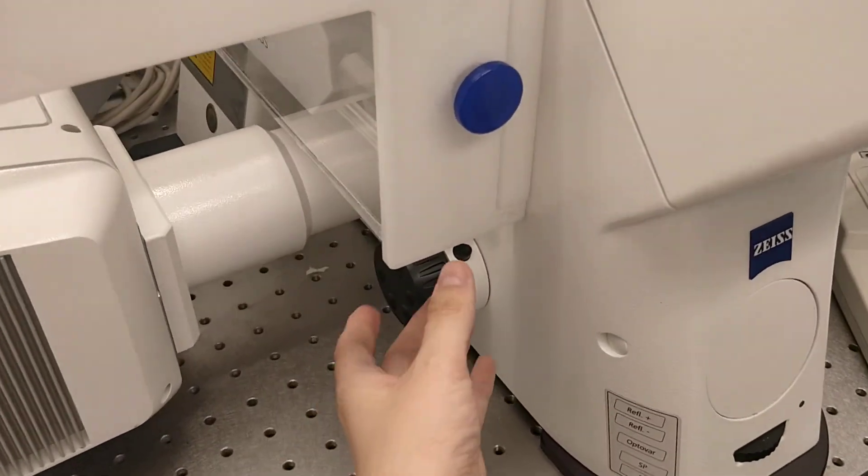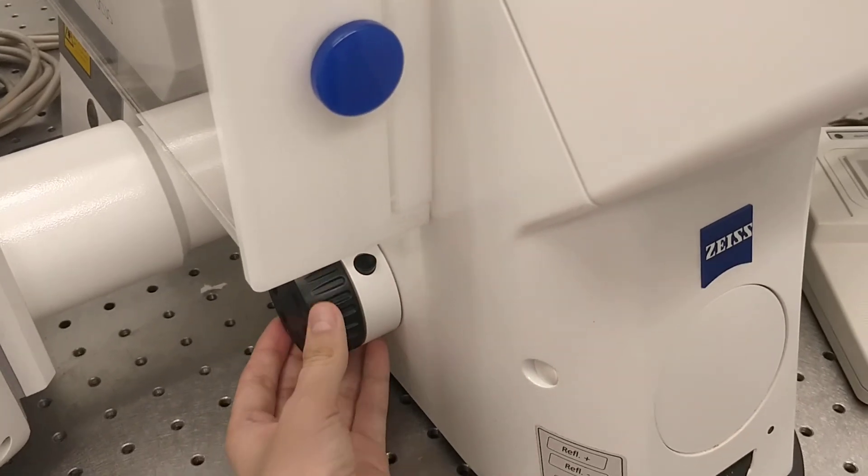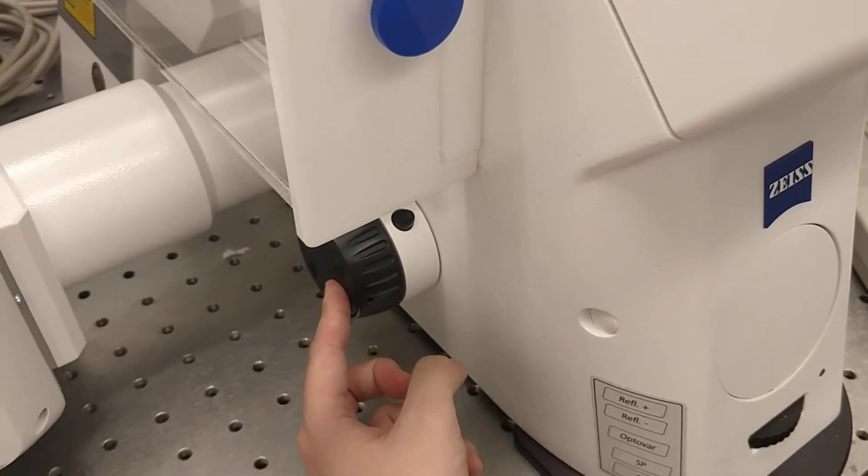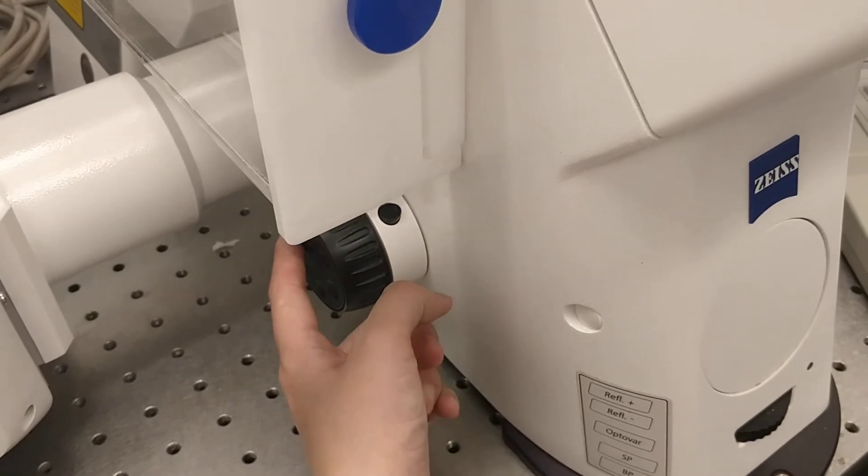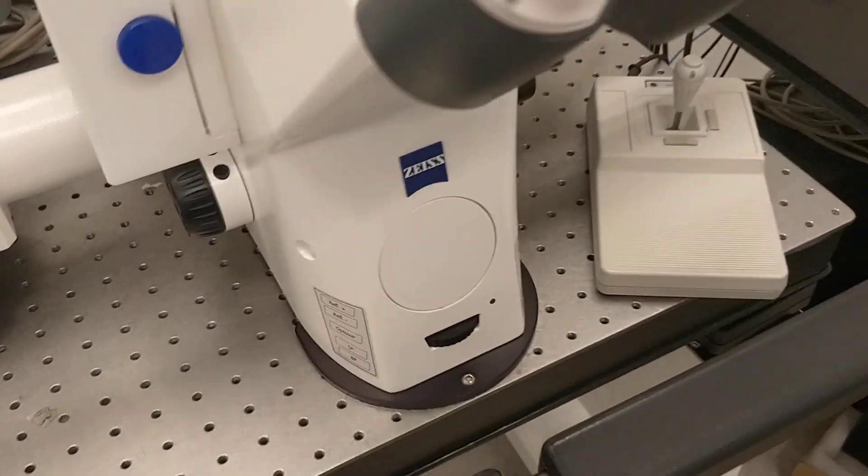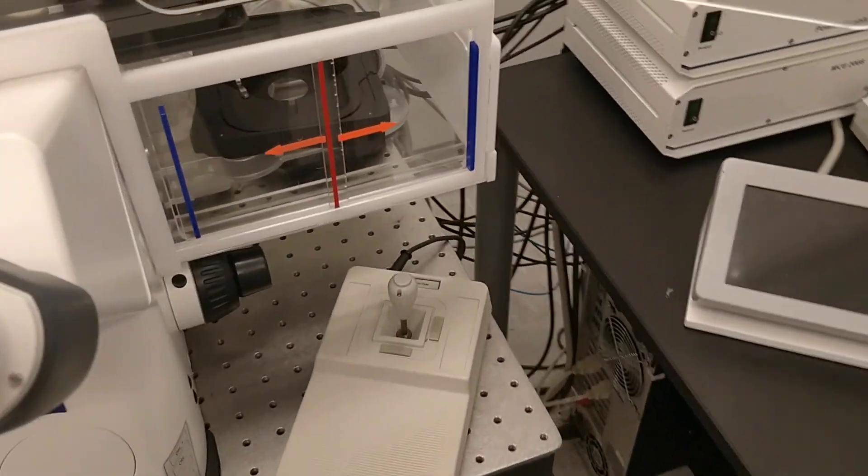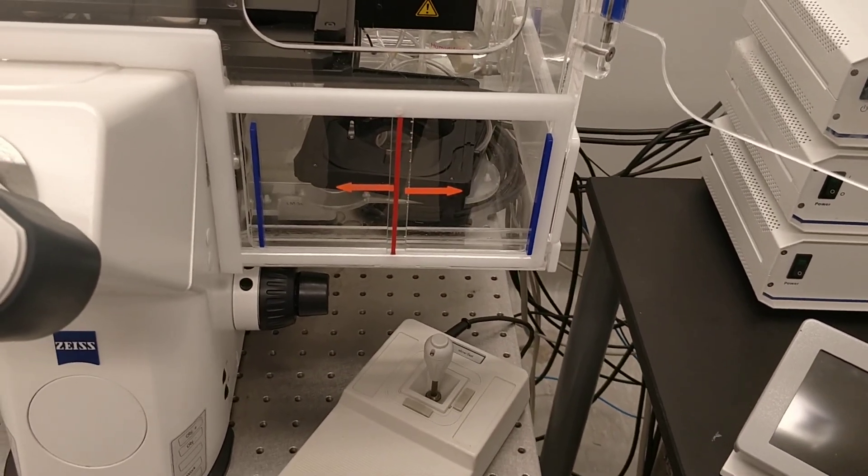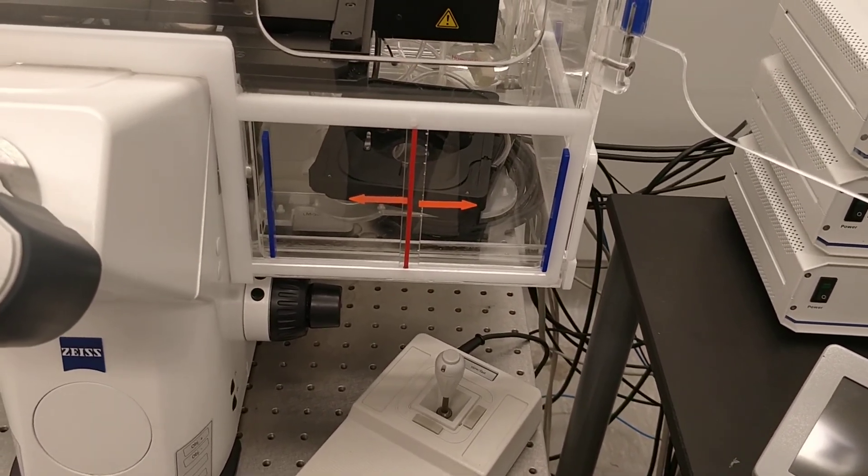This is available on both sides. So on this side is the same. So you have the coarse focus lower and higher. And inside, this is a fine focus. But this button is not the same function as the other button. So that is for the Z position. So if you're increasing the objective or lowering the objective.